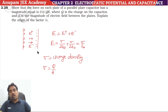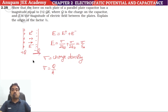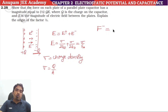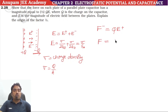If we look at the negative plate, it has a minus Q charge, and the other plate has plus Q charge. So the force on the minus Q plate is Q multiplied by the electric field due to the positive charge alone.